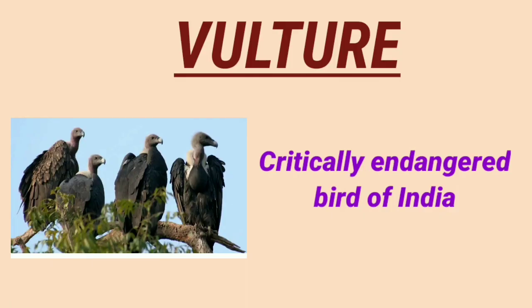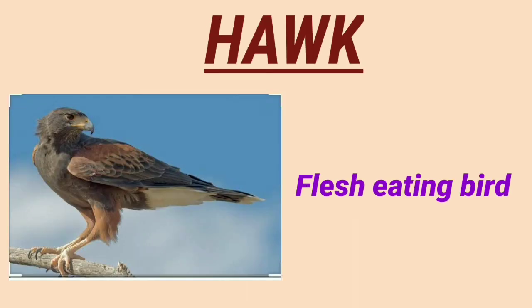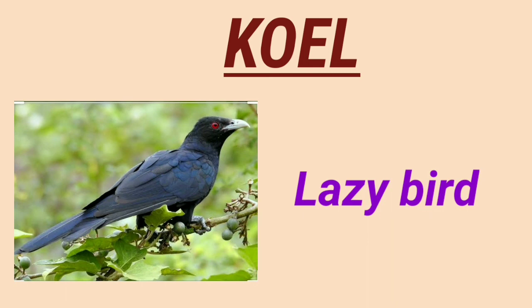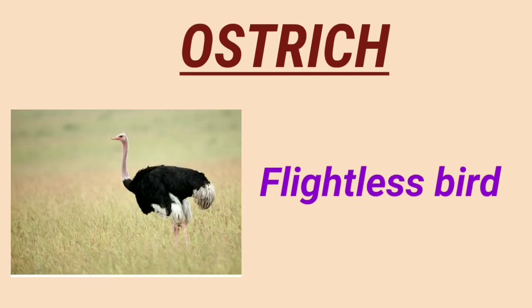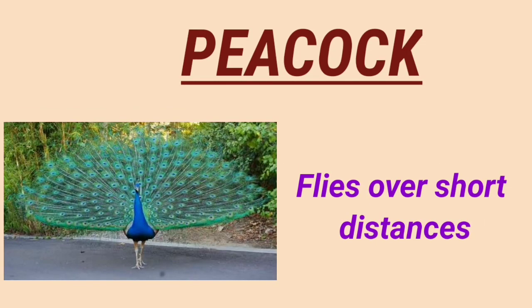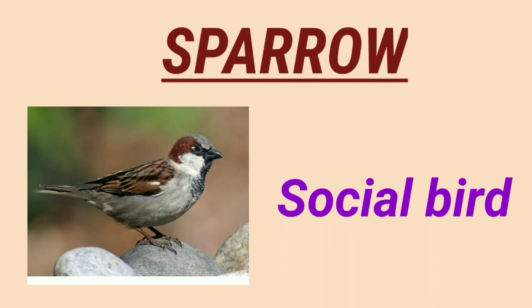Let's solve the puzzle of part B. Vulture is a critically endangered bird of India — it faces danger of extinction due to kidney problems. Hawk is a flesh-eating bird. Coyle is a lazy bird — it is so lazy that it doesn't even build its own nest. Generally birds fly, but ostrich is a bird that cannot fly — it's a flightless bird. Peacock is a bird that flies only over short distances. Sparrow is known as a social bird.